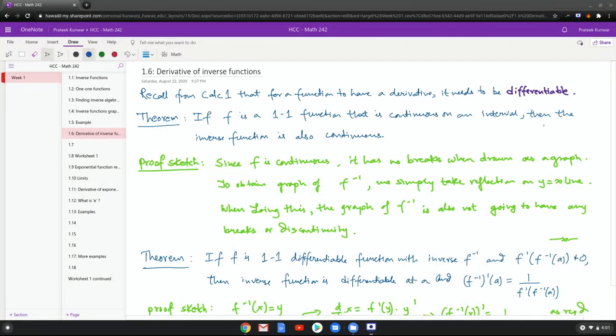Which further requires that it is continuous and also doesn't have any kinks and corners in it. So here's the theorem: if a function is 1-to-1 that is continuous on an interval, then the inverse function is also continuous.